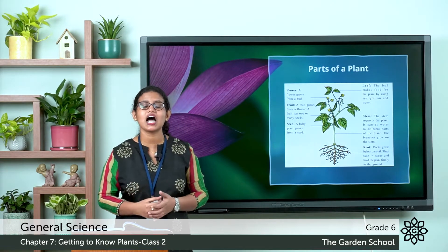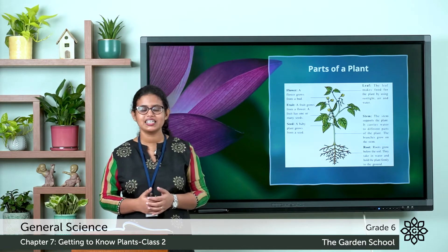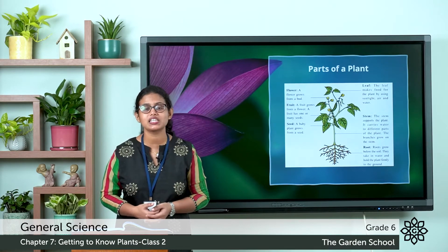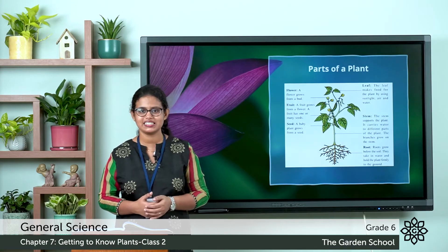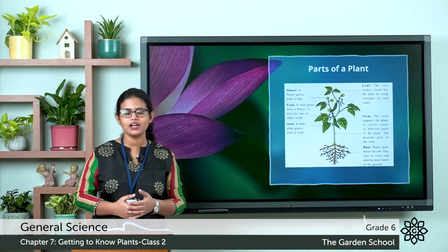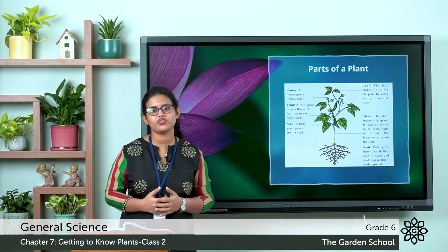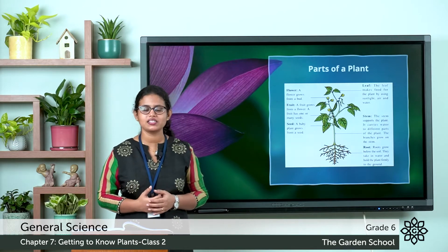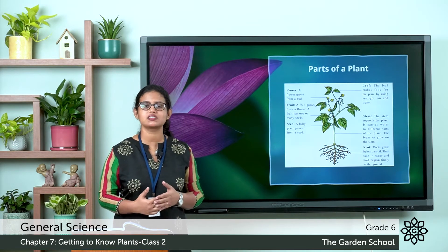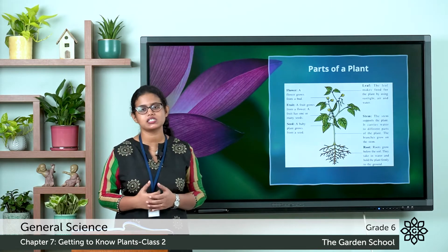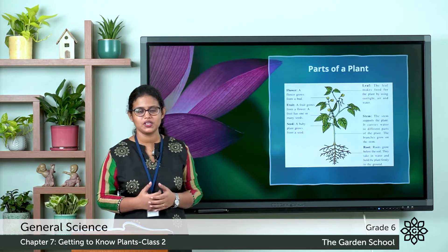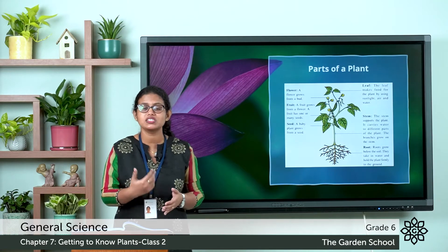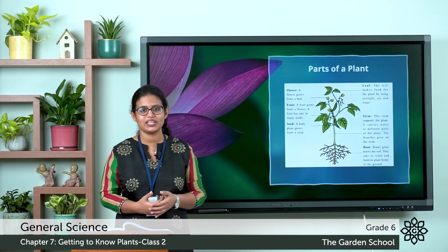Seeds hide inside the fruit and some fruits have many seeds, while there are fruits that have only one seed. So most of the plants have a root system and a shoot system. Most plants have roots that grow below the soil.